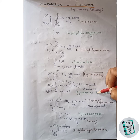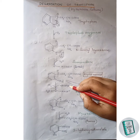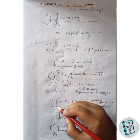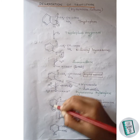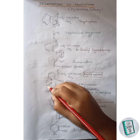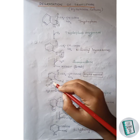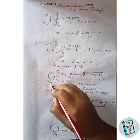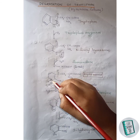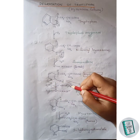In this pathway, kynurenine in the presence of kynurenine hydroxylase gets converted to 3-hydroxykynurenine. NADPH2 donates two hydrogens and O2 donates two oxygen atoms. One hydrogen of NADPH2 along with one oxygen of the O2 molecule joins to this carbon to form an OH group. The remaining hydrogen of NADPH2, the remaining oxygen of O2, and the hydrogen already present on that carbon are released as water. Thus 3-hydroxykynurenine is formed.